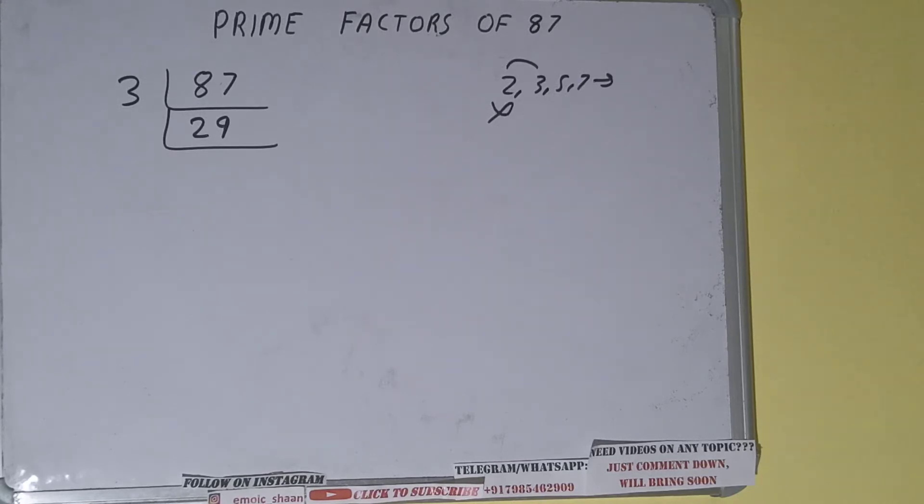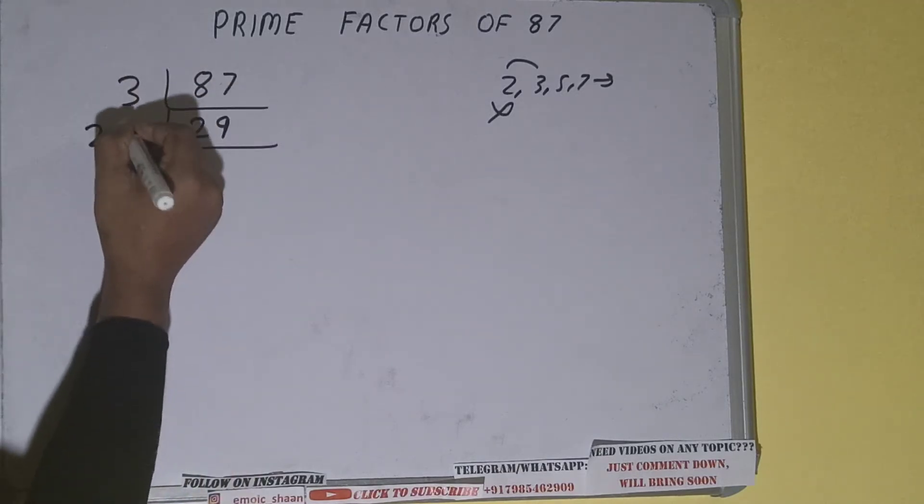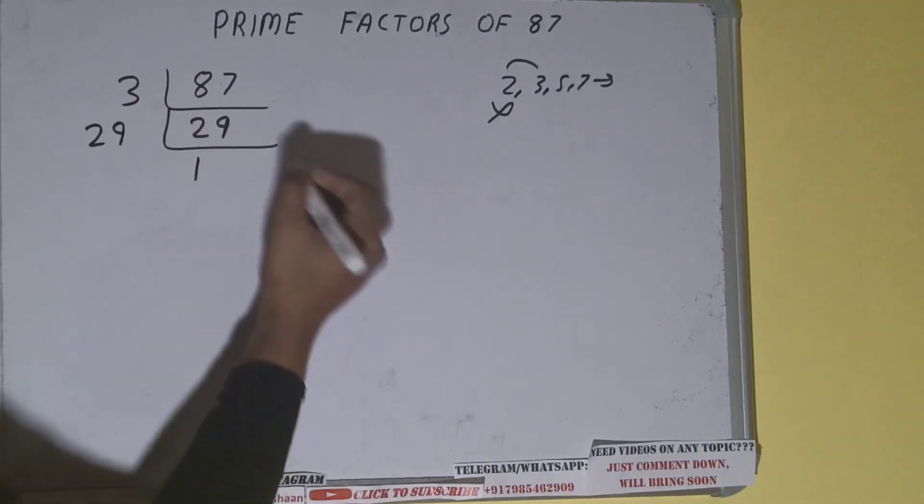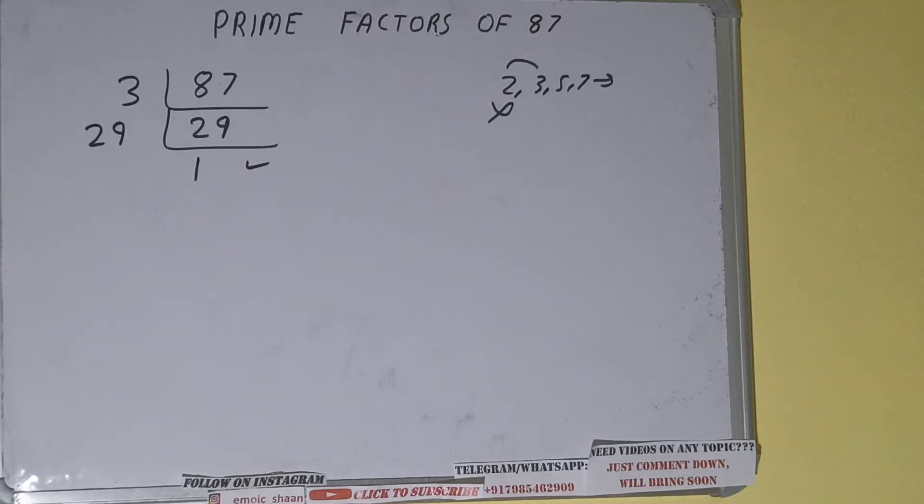And the number 29 is a prime number. That means it can be divided by itself only, that is 29. And once we do so, we'll be getting one. Once we get one, we need to stop and do...